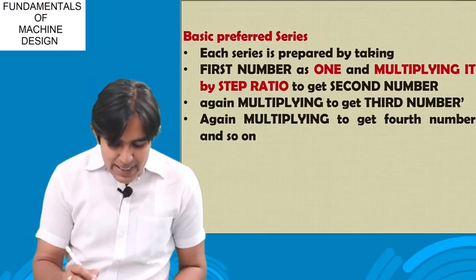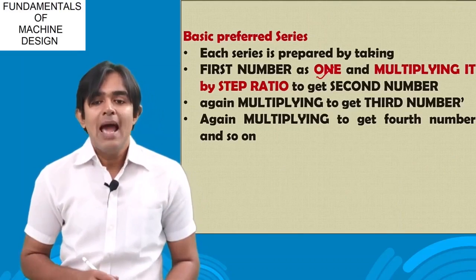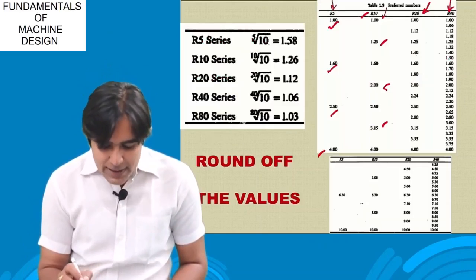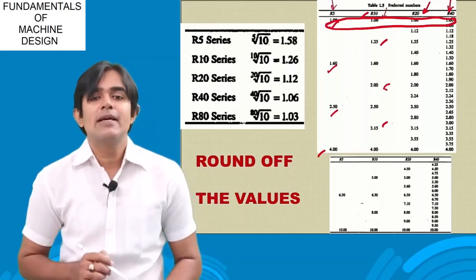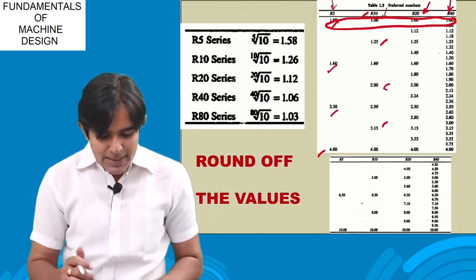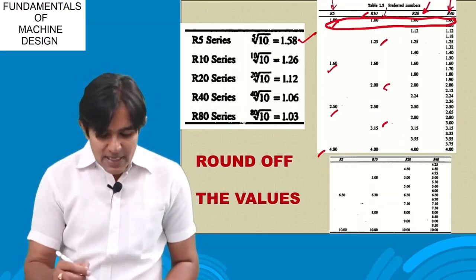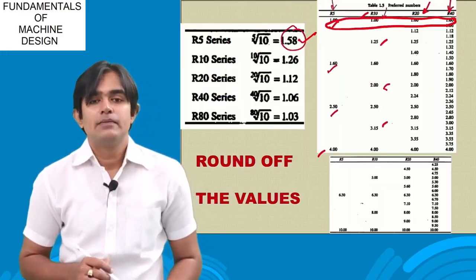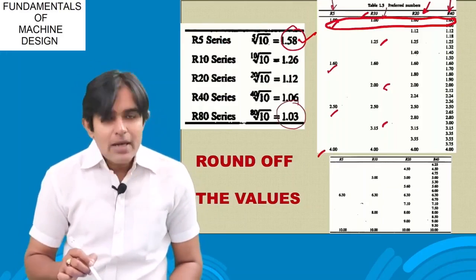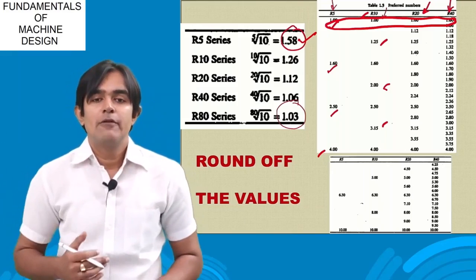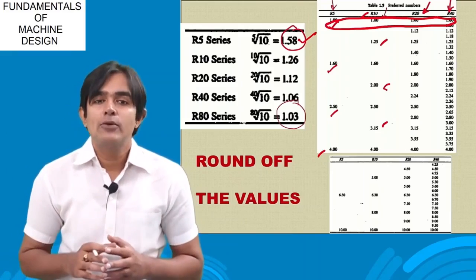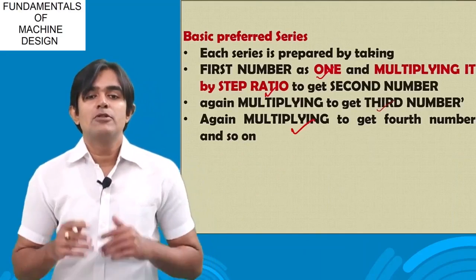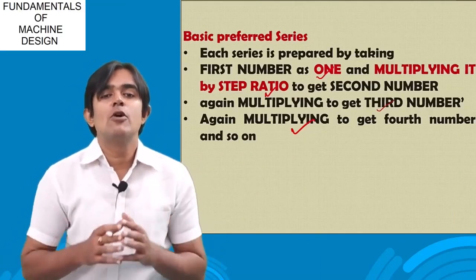Each series is prepared by taking the first number as 1 and then multiplying it by the step ratio. Whether using R5, R10, or R20, the first number is always 1. For the R5 series, 1 is multiplied by 1.58; for R80, 1 is multiplied by 1.03, and so on. The step ratio keeps multiplying and gives the sizes of the products.